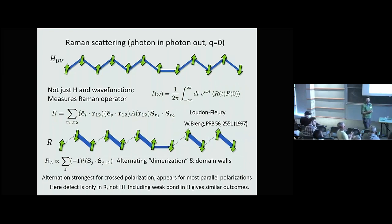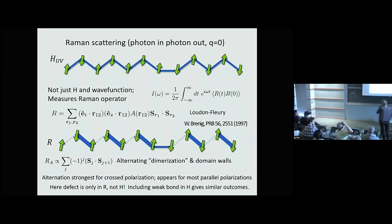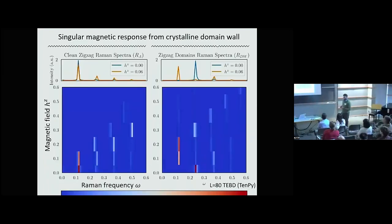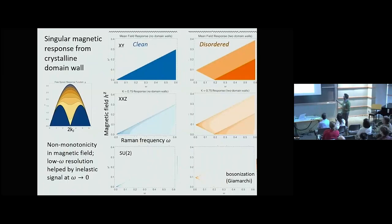Final question: Is the calculation done in a finite-size system or in the thermodynamic limit? Reply: The DMRG calculation is finite size with 80 sites; the bosonization calculation is in the thermodynamic limit, just with a wavevector associated with the defect density. The calculation is effectively thermodynamic.